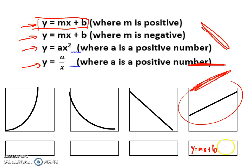So the first one is going to be where b is positive. This would be y is equal to mx plus b, where b is negative.